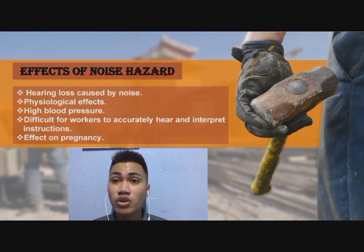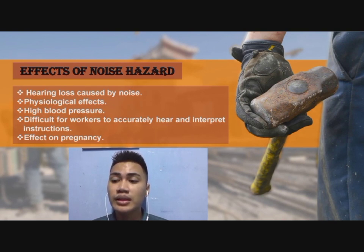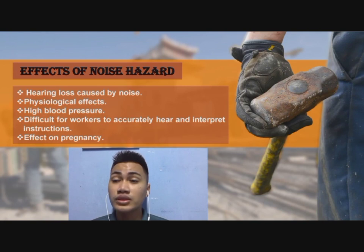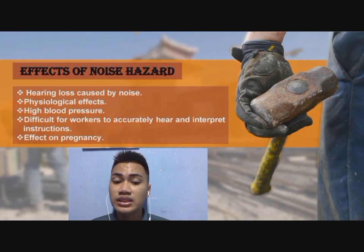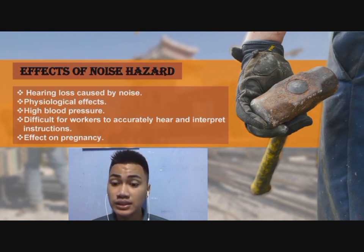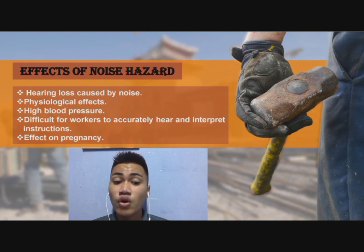Cause number two is physiological effects. Noise can affect the cardiovascular system, causing blood pressure to increase and is detected to be related to the brain. Stress is linked to an increase in catecholamine levels in the blood. Number three is high blood pressure. Workplace stress is more often caused by a combination of risk factors rather than a single problem. Constant noise in the workplace, even at reduced levels, can elevate blood pressure and is uncomfortable. Number four is difficulty for workers to accurately hear and interpret instructions. Excessive noise in the workplace can impair assessment and decision-making procedures, as well as create challenges in clearly recording speech.